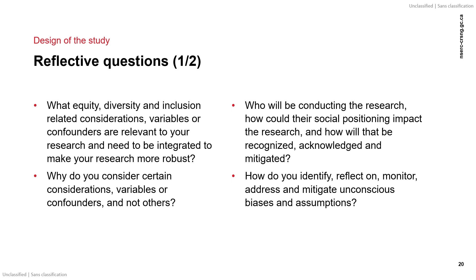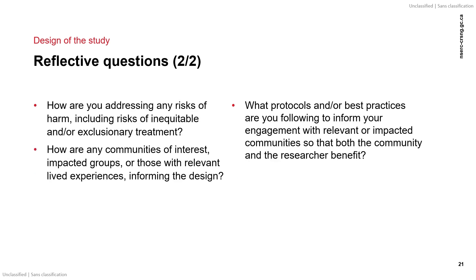Why do you consider certain considerations, variables, or confounders, and not others? Who will be conducting the research, and could their social positioning impact the research, and how will that be recognized, acknowledged, and mitigated? How do you identify, reflect on, monitor, address, and mitigate unconscious biases and assumptions? How are you addressing any risks of harm, including risks of inequitable and or exclusionary treatment?